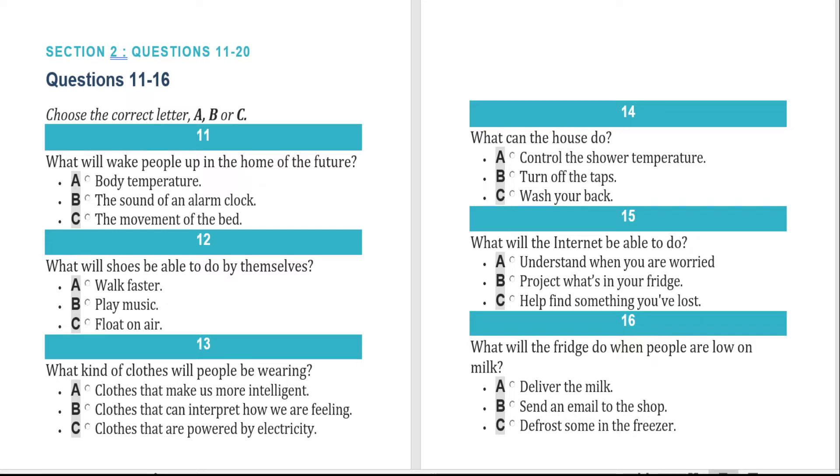All items are now programmed with a tracking device so that they will light up and signal to you where they are. Just in case the object is upstairs, the house will project its position on your fridge. Speaking of your fridge, this is now as intelligent as your clothes. Not only does it keep a record of when you're running low on everyday essentials, like milk, but it emails your local grocery store, which will deliver them for you.